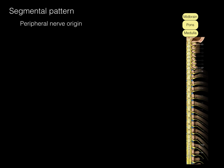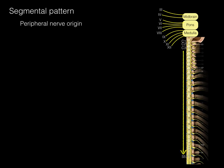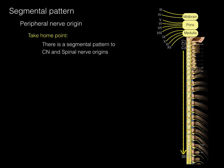There is a segmental pattern to peripheral nerves, including cranial and spinal nerves. The midbrain gives rise to cranial nerves 3 and 4. The pons gives rise to cranial nerves 5, 6, 7, and 8. The medulla gives rise to cranial nerves 9, 10, 11, and 12. Continuing in a caudal fashion, you then have C1 through S5 and coccygeal spinal nerves. The take-home point is that there's a segmental pattern to cranial and spinal nerve origins from rostral to caudal.